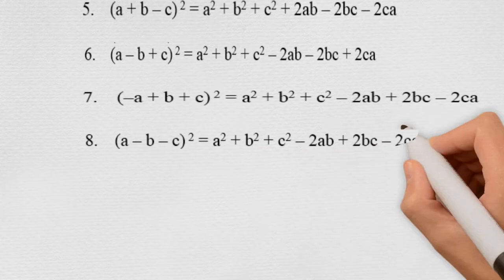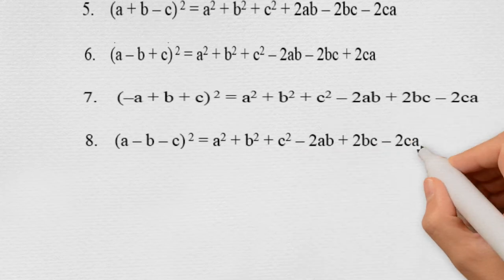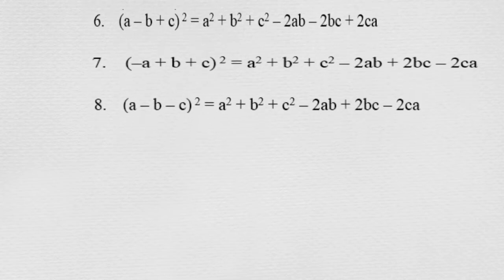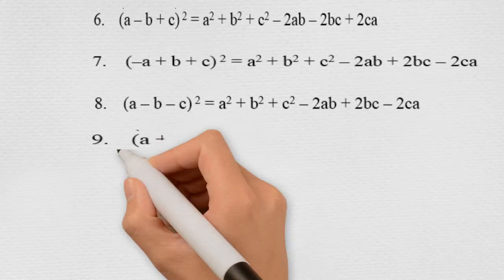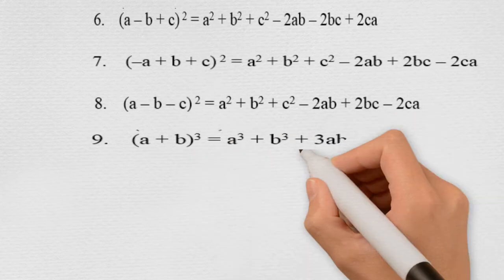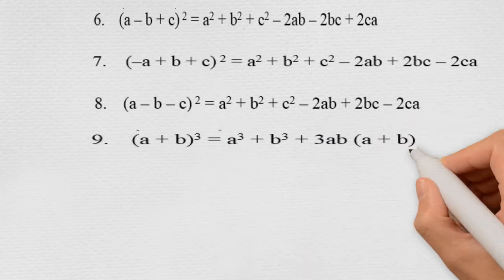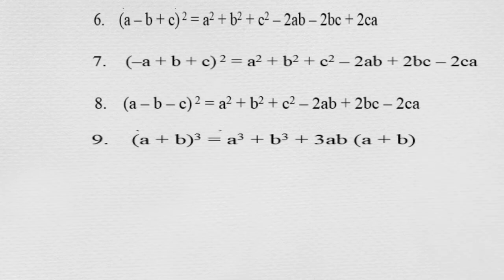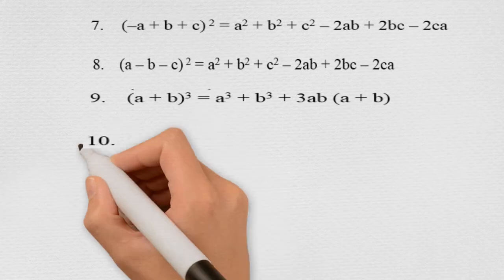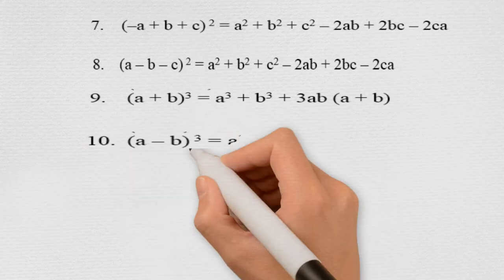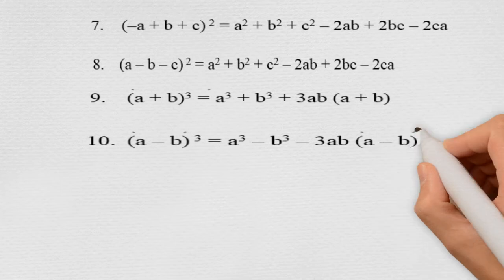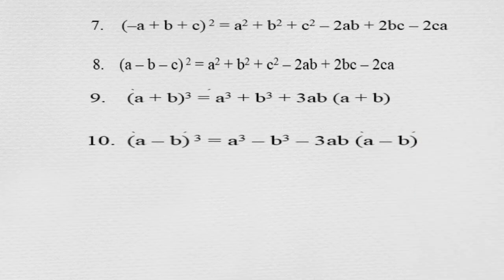The eighth identity is (a − b − c) whole square. The ninth identity is (a + b) whole cube, which is equal to a cube plus b cube plus 3ab into (a + b). The tenth identity is (a − b) whole cube, which is equal to a cube minus b cube minus 3ab into (a − b).